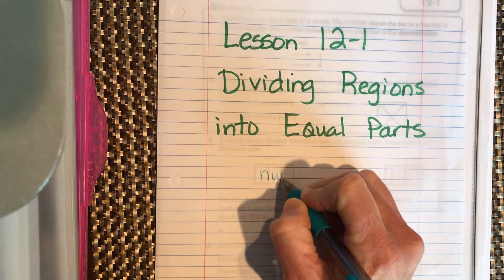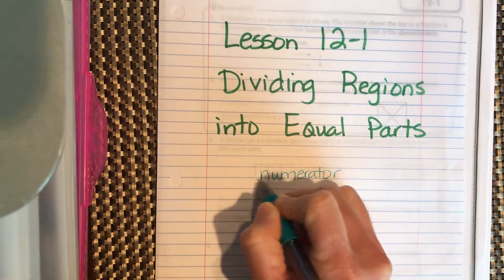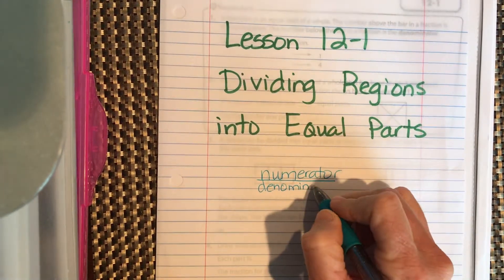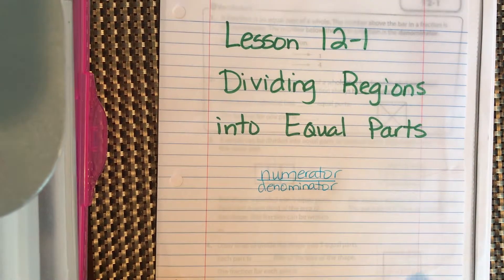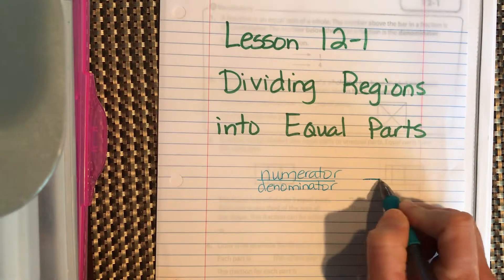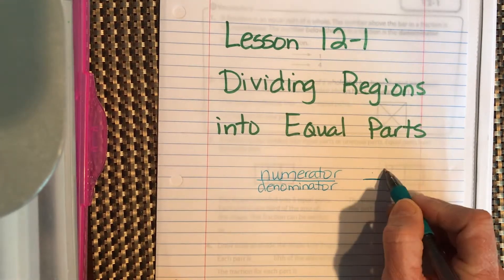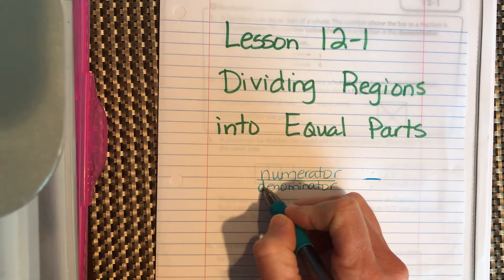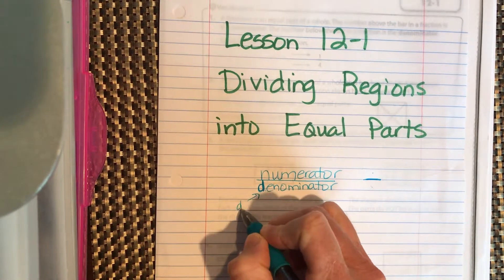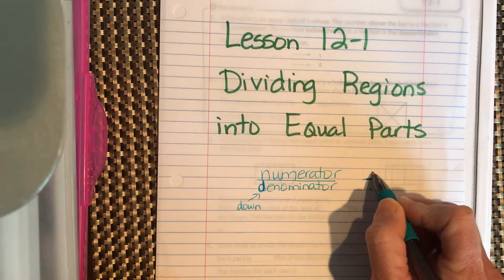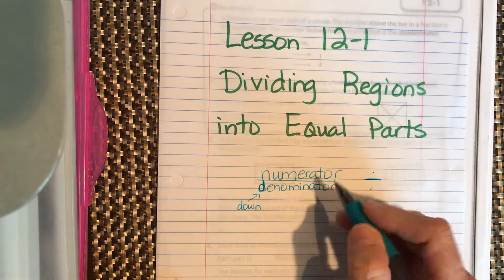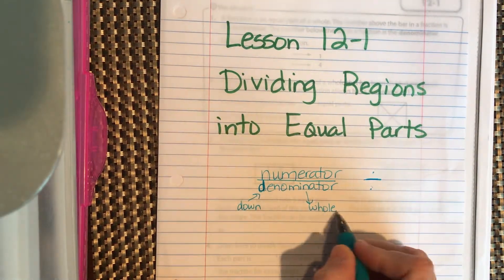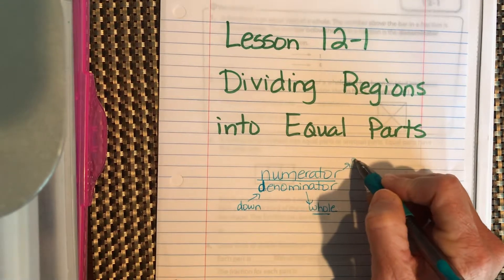When you write a fraction, you draw a line. You have the numerator on top and the denominator on the bottom. Denominator always goes down — D for down. The denominator is the total number of parts in the whole, and the numerator is the number that's shaded.